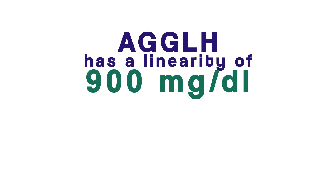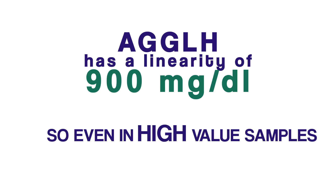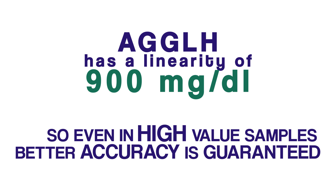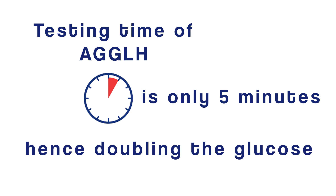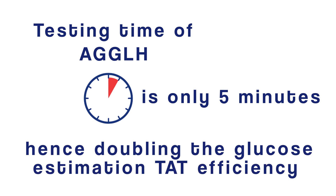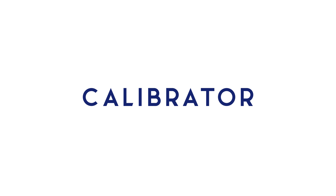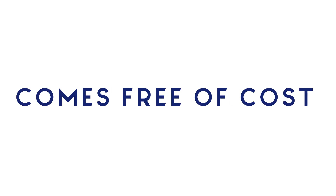AGGLH has a linearity of 900 milligrams per deciliter, so even in high-value samples, better accuracy is guaranteed. The testing time of AGGLH is only five minutes, hence doubling the glucose estimation turnaround time efficiency.